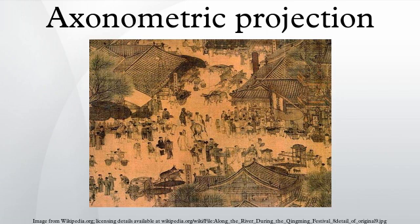Whereas the term orthographic is sometimes reserved specifically for depictions of objects where the axis or plane of the object is parallel with the projection plane, in axonometric projection the plane or axis of the object is always drawn not parallel to the projection plane. With axonometric projections the scale of distant features is the same as for near features, so such pictures will look distorted, as it is not how our eyes or photography work. This distortion is especially evident if the object to view is mostly composed of rectangular features.